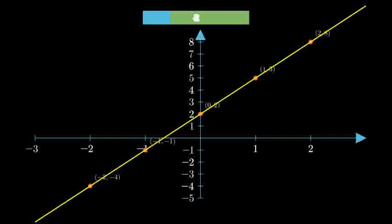This line has some important characteristics. The slope is 3, which means for every 1 unit we move right we go up 3 units. The y-intercept is 2, which is where the line crosses the y-axis at the point 0 comma 2.